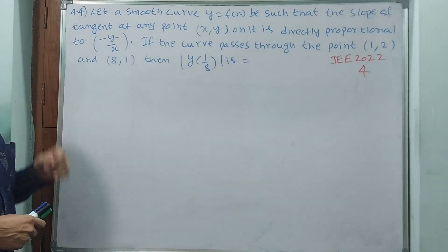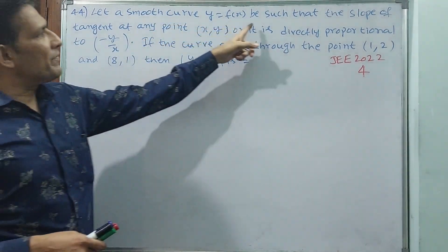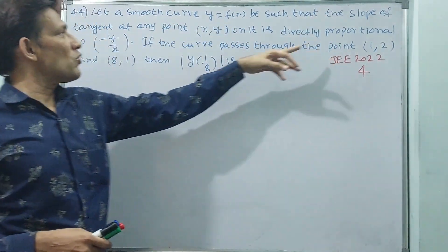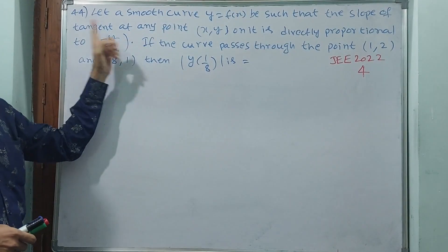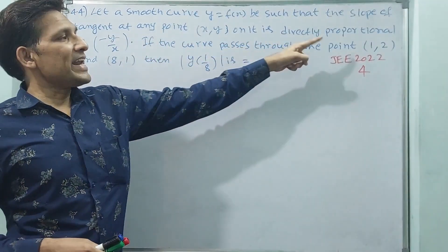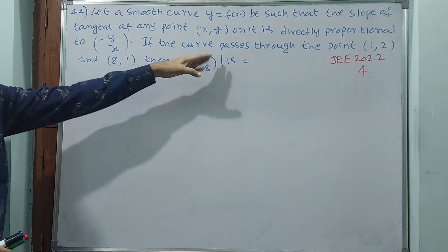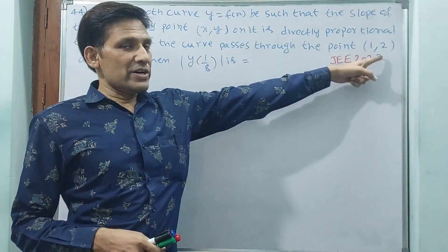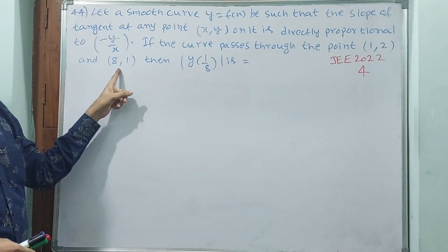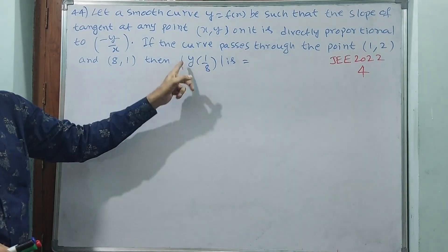Question number 44. Let us move curve y equals f(x) such that the slope of tangent at any point (dy/dx) on it is directly proportional to minus y by x. If the curve passes through the point (1,2) and (8,1), then what is the value of |y(1/8)|?